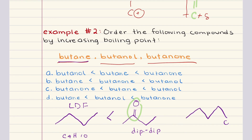Finally, let's look at butanol. The molecular formula of butanol is C4H9OH. This is an alcohol, meaning it contains a hydroxyl group. This allows hydrogen bonding, which is the strongest of the three intermolecular forces discussed here. Because of this, butanol has the highest boiling point among the three. So in increasing boiling point order: butane, butanone, then butanol. The correct answer for problem two is B.